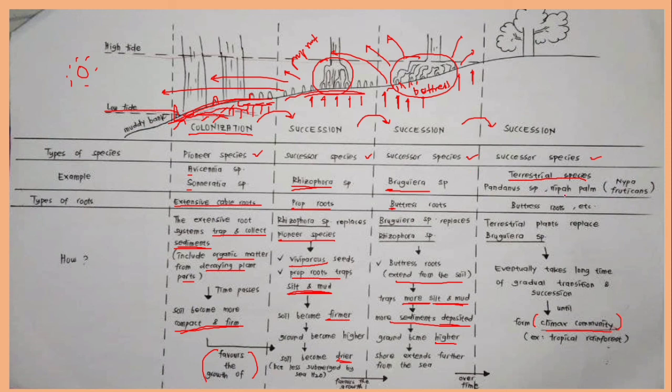Such as pandanus, nipah. And this terrestrial species has buttress root system. And this process take a long time of transitions and successions process until forms climate communities, such as tropical rainforest. This small plants will be replaced by the bigger tree and this process will be keep repeating until forms a very stable, very climax balanced ecosystems.